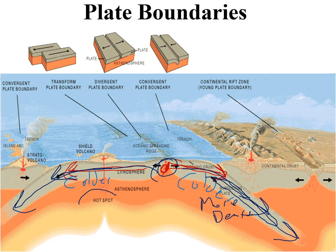A hotspot just sits there while heat comes up from Earth, and the plate moves over the hotspot, making a whole chain of volcanoes in a line — just like the Hawaiian chain of islands.